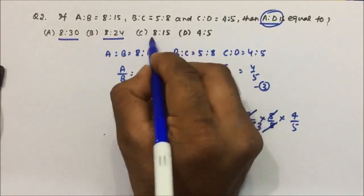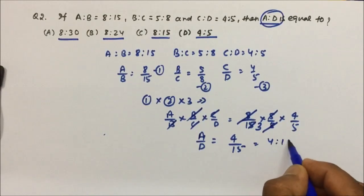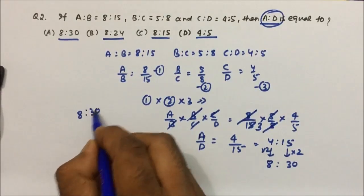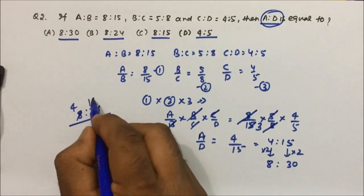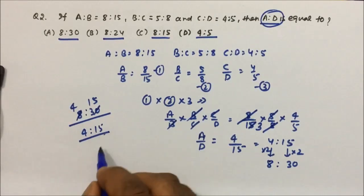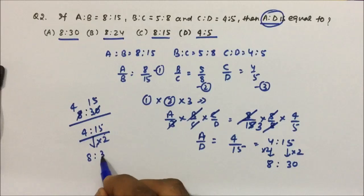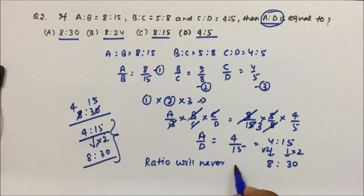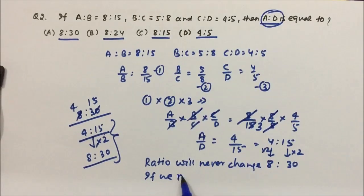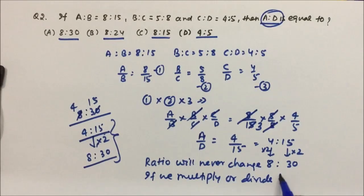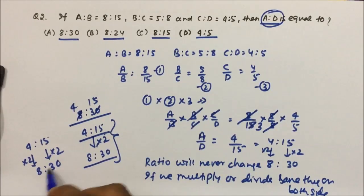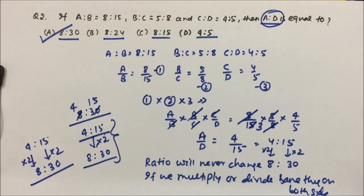We don't have 4:15 as an option. So instead, multiply both sides by 2, which gives 8:30. Now, 8:30 and 4:15 are the same ratio because ratio never changes if we multiply or divide the same thing on both sides. So 4:15 is the same as 8:30. Looking at the options, option A (8:30) is the answer.